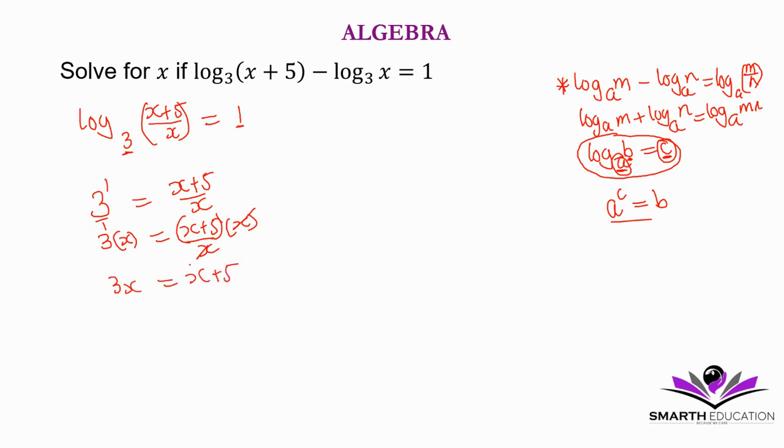Then transpose x to this side. 2x = 5. Then divide by 2 on both sides of the equation. x = 5/2. If you want to write it as a decimal, this is 2.5.